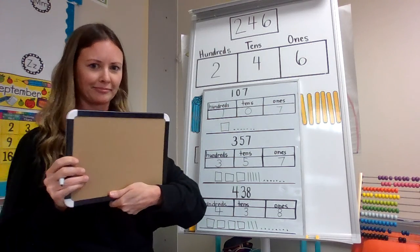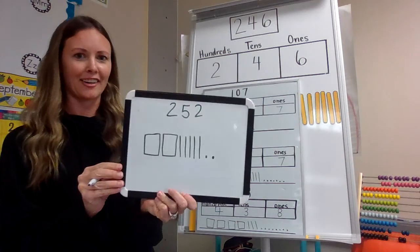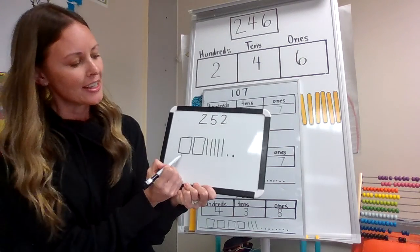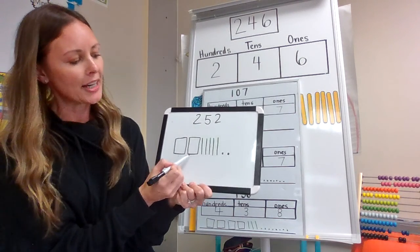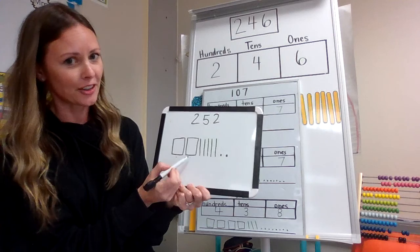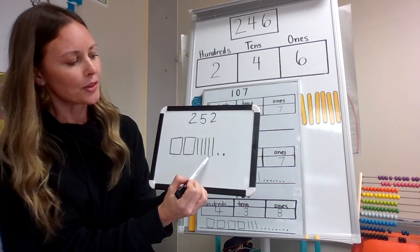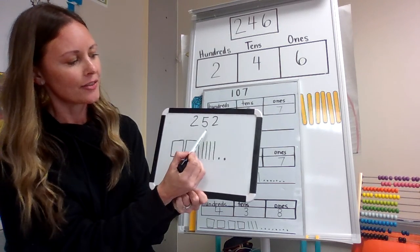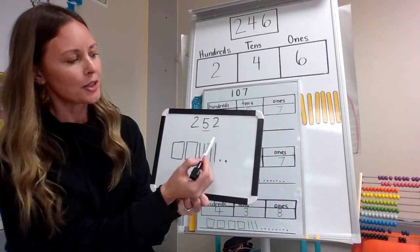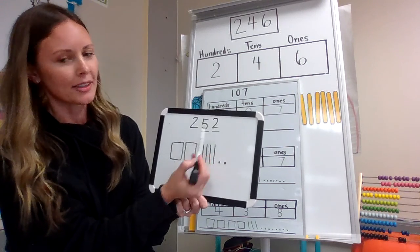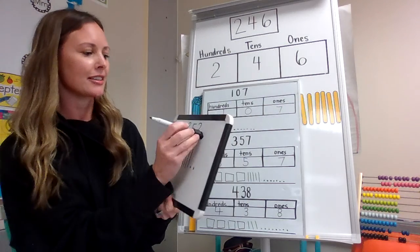All right, yours should look like this. There's one, two for your hundreds, and then one, two, three, four, five for your tens, and then one, two for your ones place. Okay, let's try another one.